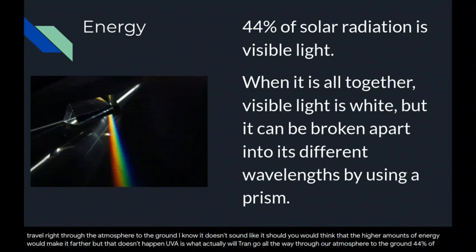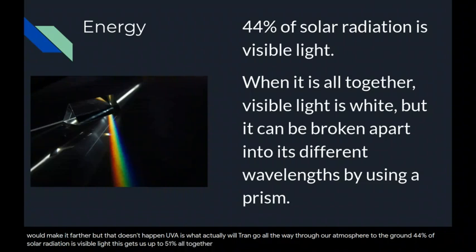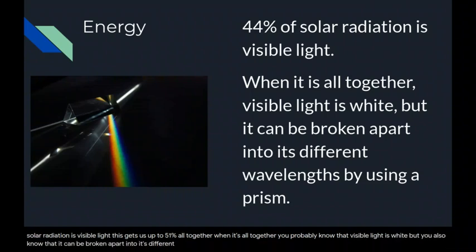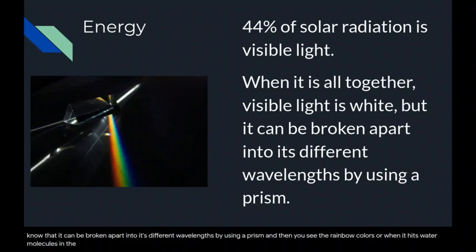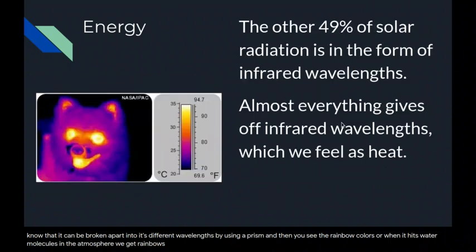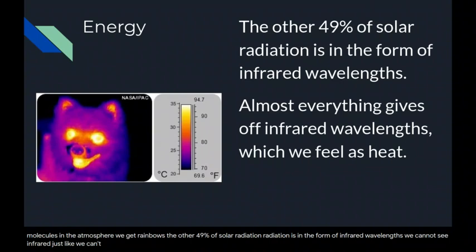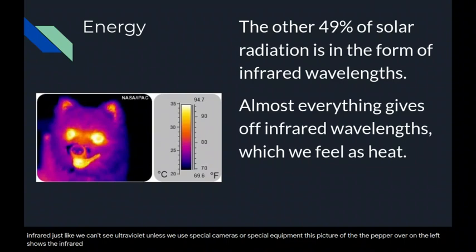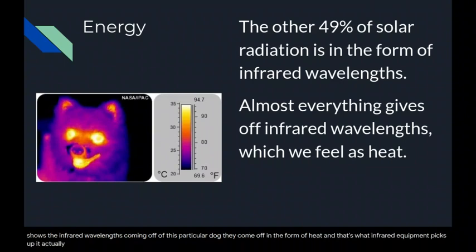44% of solar radiation is visible light, which gets us to 51% altogether. Visible light is white, but it can be broken apart into its different wavelengths by a prism — giving us the rainbow colors — or when it hits water molecules in the atmosphere, we get rainbows. The other 49% of solar radiation is in the form of infrared wavelengths. We cannot see infrared unless we use special cameras. A thermal image of a dog shows infrared wavelengths coming off as heat — that's what infrared equipment picks up.